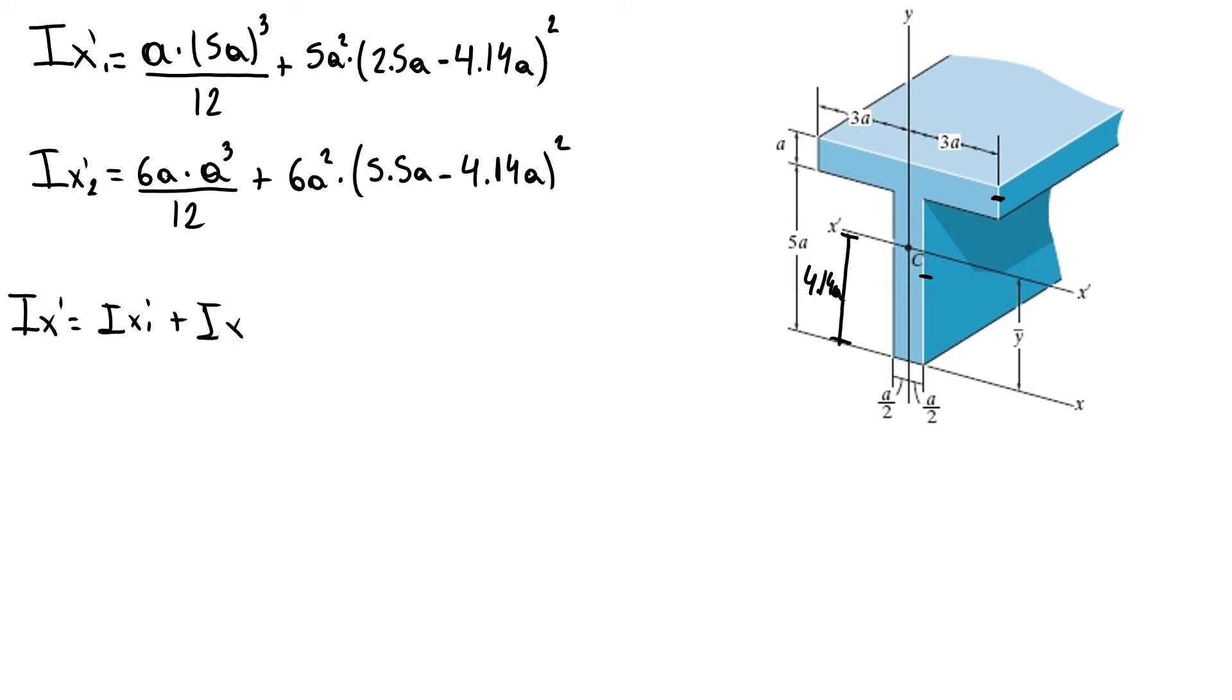In order to find our x-prime, we just add x1 plus x2. I did two different approaches to see how we're going to do this. So my x-prime equals 125 over 12 a to the fourth, plus the second term, which is 13.45 a to the fourth.